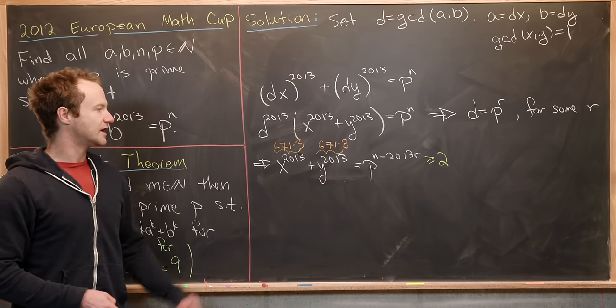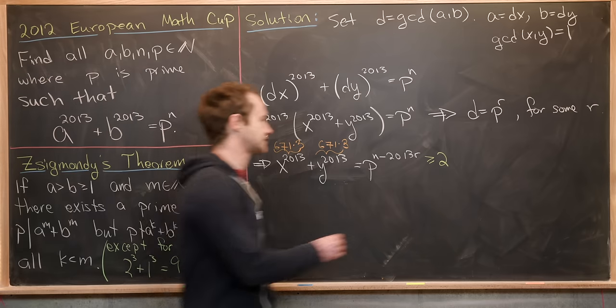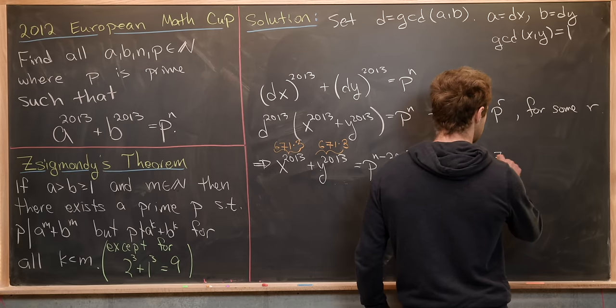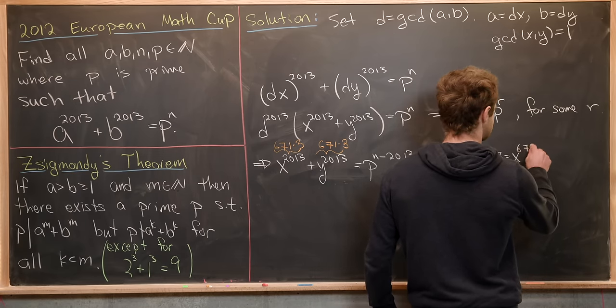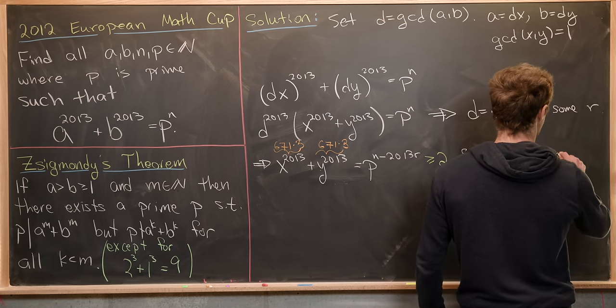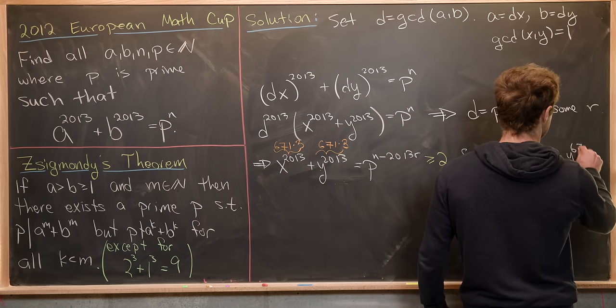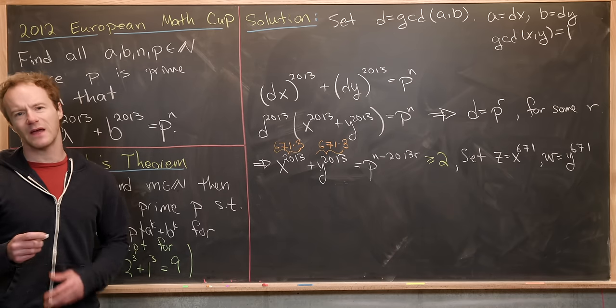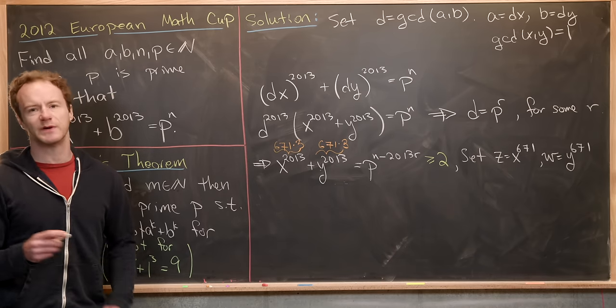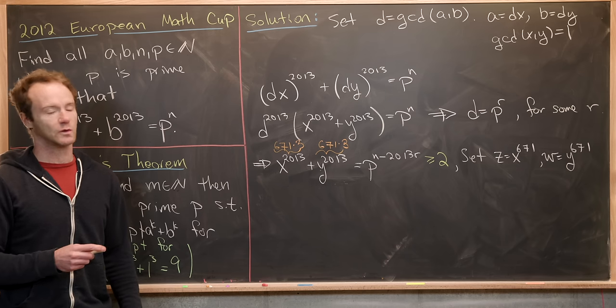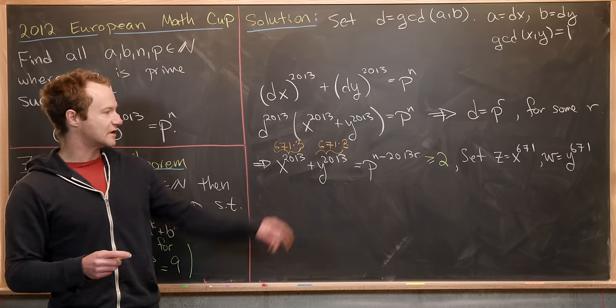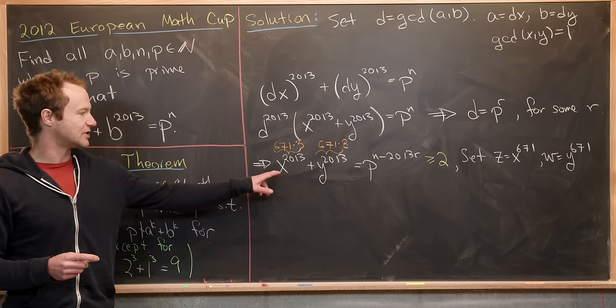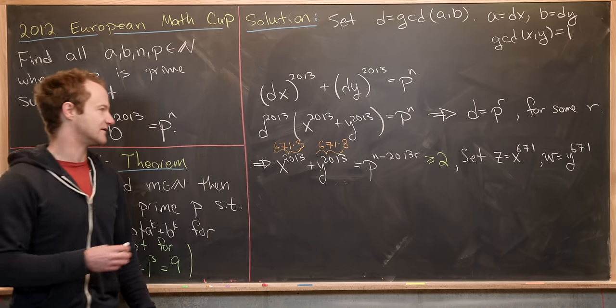Okay, great. Now we're going to do a bit of a change of variables. So let's set z equal to x to the 671 and we'll set w equal to y to the 671. This may seem kind of unnecessary, and it is a little bit unnecessary, but it does make it a little simpler to work with. So we'll take those values of z and w and simplify the left-hand side of this equation.